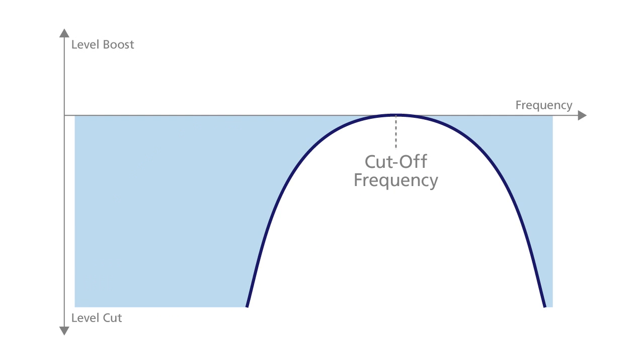A band pass filter cuts the higher and lower frequency elements of a sound, only allowing a narrow band of sound around the cutoff frequency to pass. This gives the sound a nasal quality. The filter also has the effect of robbing the sound of a lot of its energy.